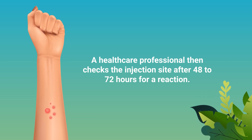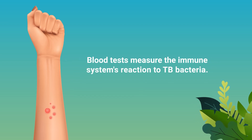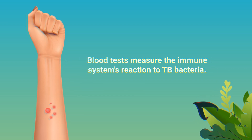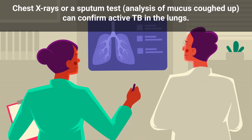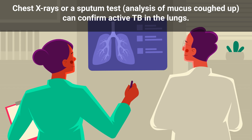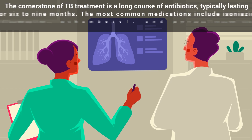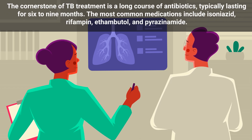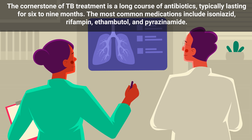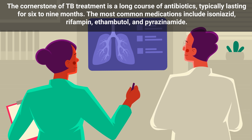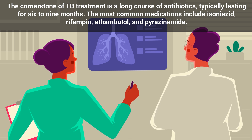Blood tests measure the immune system's reaction to TB bacteria. Chest x-rays or a sputum test can also confirm active TB in the lungs. The cornerstone treatment for tuberculosis is a long course of antibiotics, typically lasting for six to nine months.